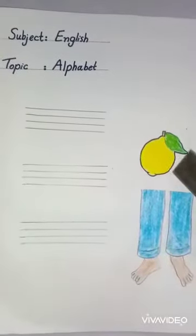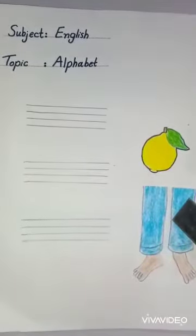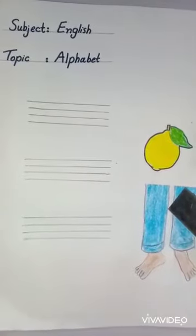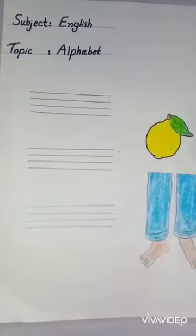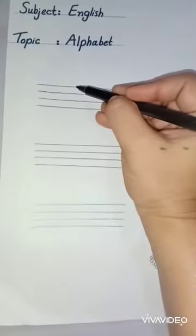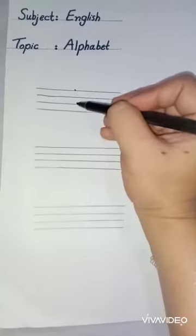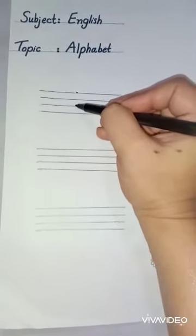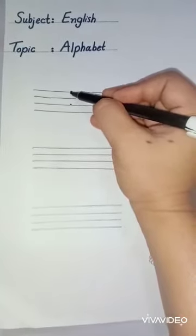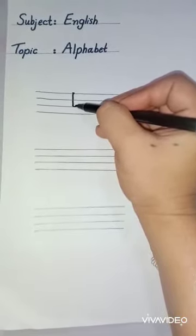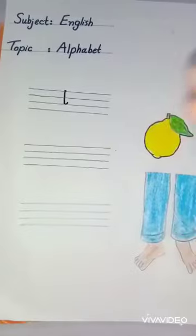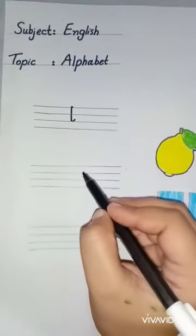Now you will learn how to write alphabet L. First, make a dot on the first line, then make a dot on the third line. Then make a straight line and then make a curve. This is alphabet L.